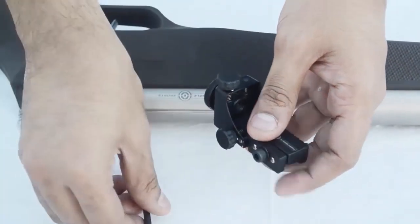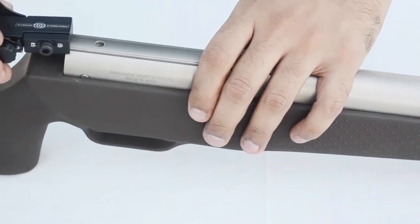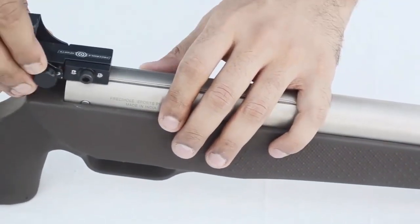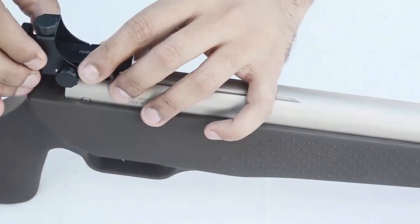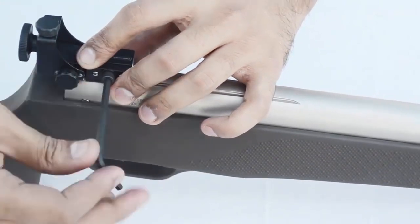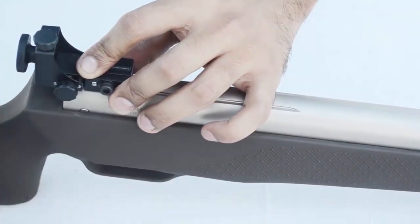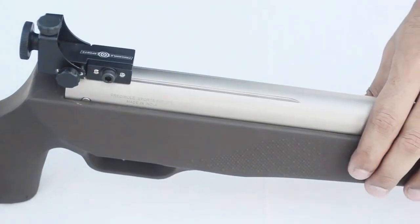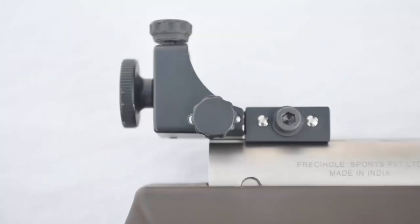Loosen the screw on the rear PeepSight and slide it onto the dovetail. Tighten the screw on the rear PeepSight.